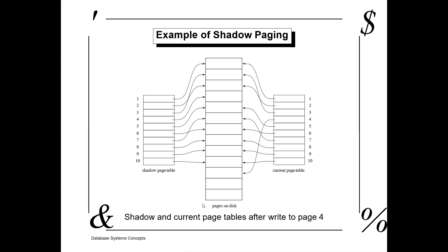There are three components: pages on the disk, the current page table, and the shadow page table. Whatever operations we are going to perform are performed on the current page table. Before starting the transaction, the current page table and shadow page table values are the same.